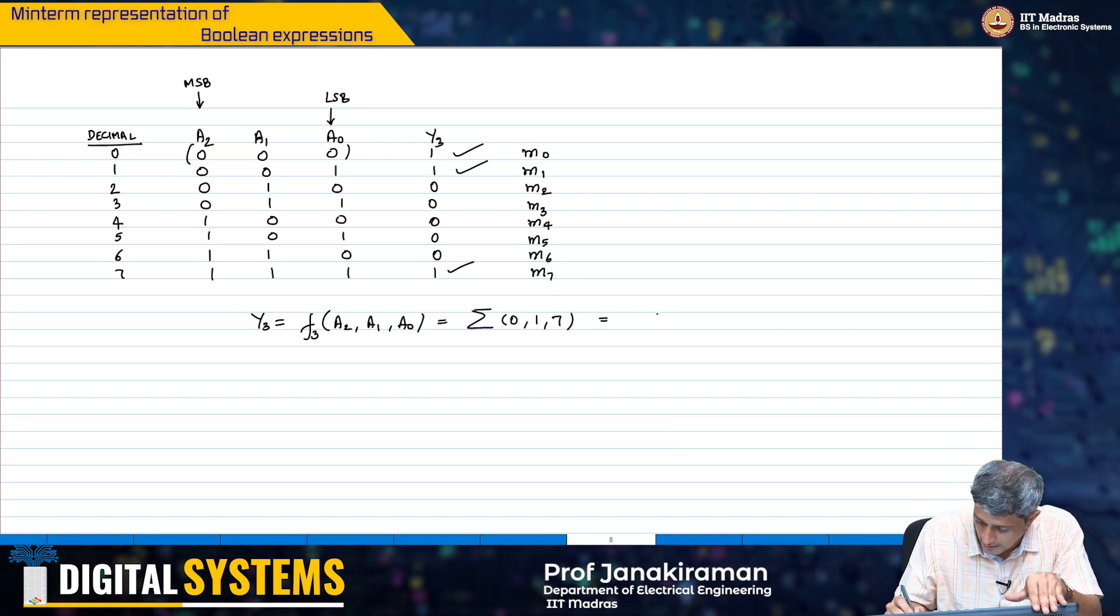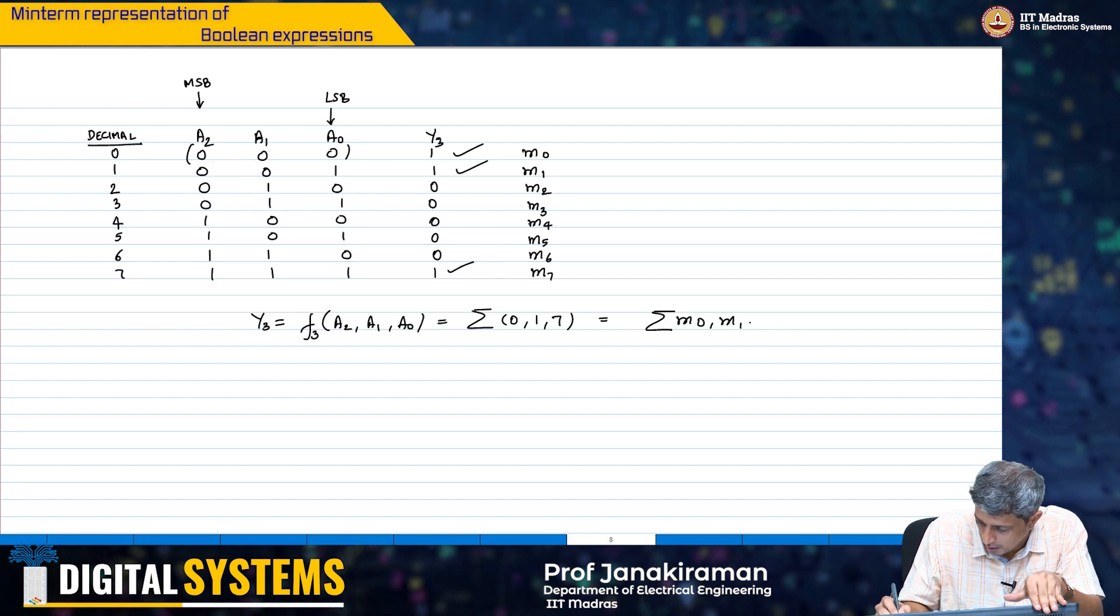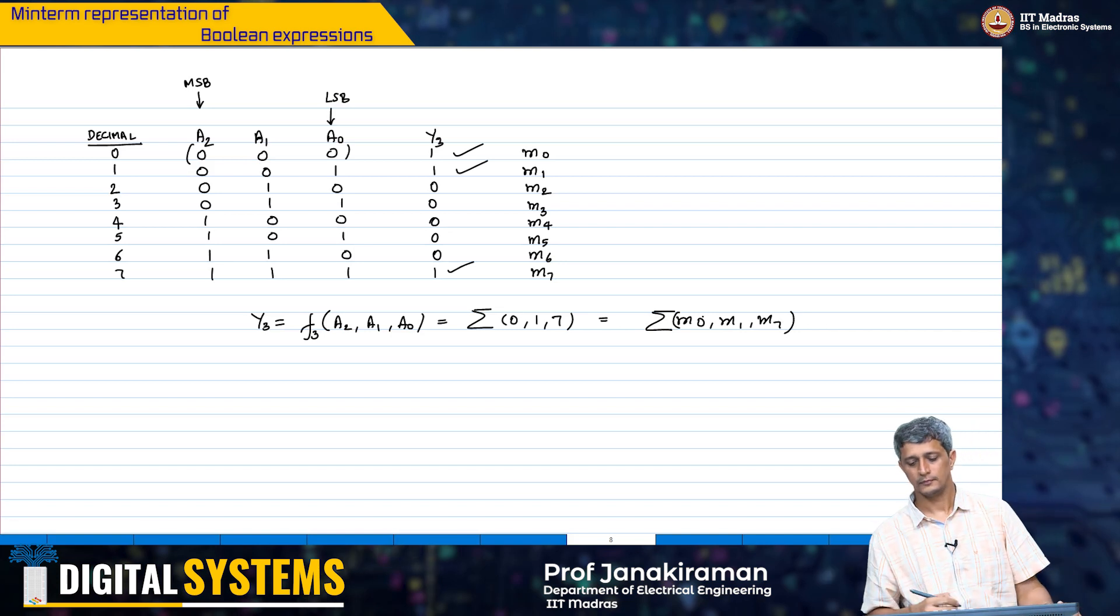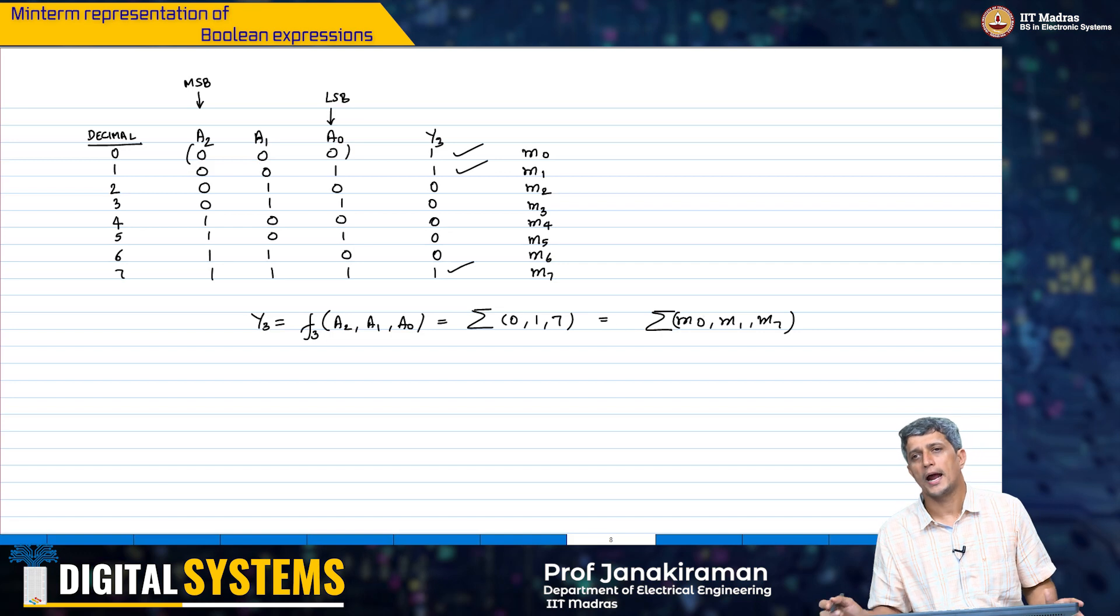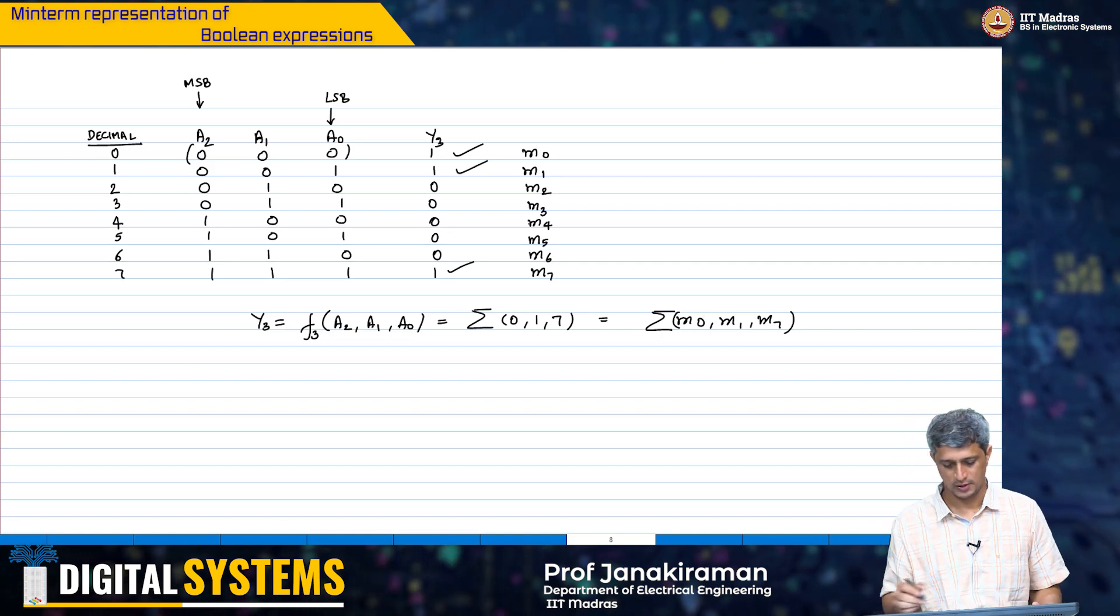So, I could also write this as summation m0, m1, m7. And then I could go ahead and do the Boolean simplification for this.